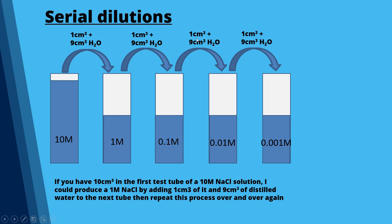You can also dilute by half: take 5 cm³ of a 10 molar solution and add 5 cm³ of water, and you get a 5 molar solution. This is a powerful method because you can dilute massively and fairly accurately with a simple technique.